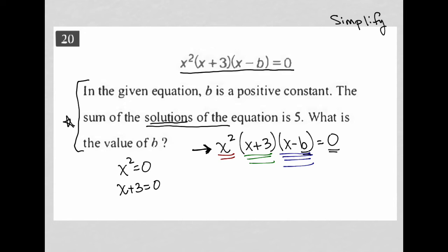It would make the whole thing equal to zero. And then lastly, X minus B could be zero. And if that were the case, it would make the entire product of X squared times X plus three times X minus B equal to zero, right? Because as soon as you multiply zero by anything, the entire product is equal to zero.